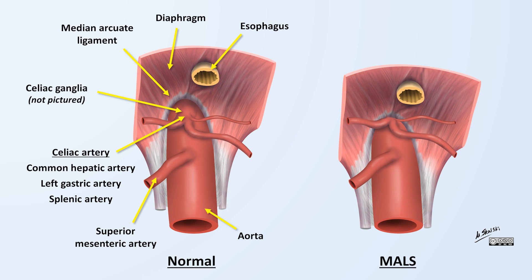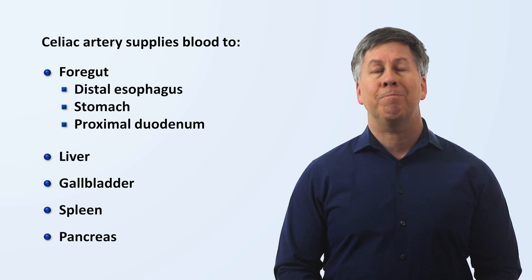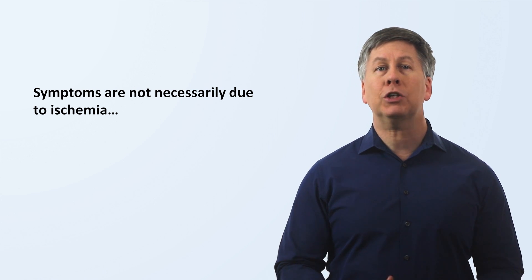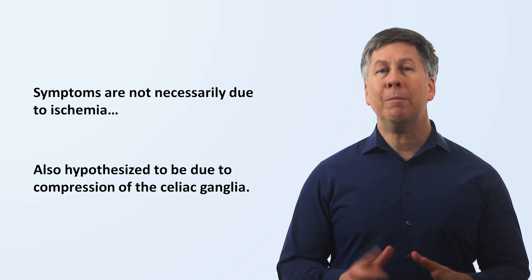In MALS, there is an altered relationship between the median arcuate ligament and the celiac artery, such that either the artery takes off from the aorta too superiorly, or the median arcuate ligament is too inferior, and thus the ligament compresses the artery. The prevailing theory as to how this leads to symptoms is relatively obvious: a lack of blood flow leading to ischemia. After all, the celiac artery supplies blood to much of the gut, the liver, gallbladder, spleen, and pancreas. However, this may not be the mechanism in all patients. It has also been hypothesized that compression of the nerves in the celiac ganglia and plexus are responsible in some, if not most, patients.